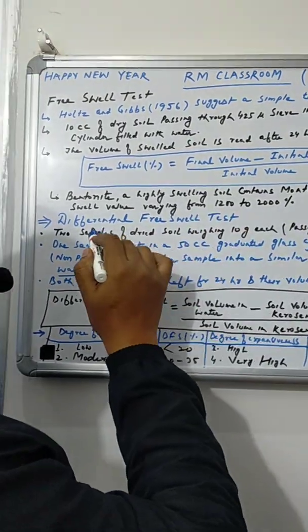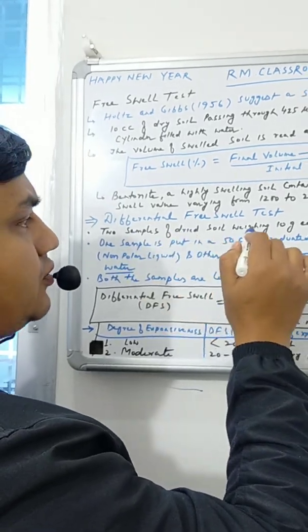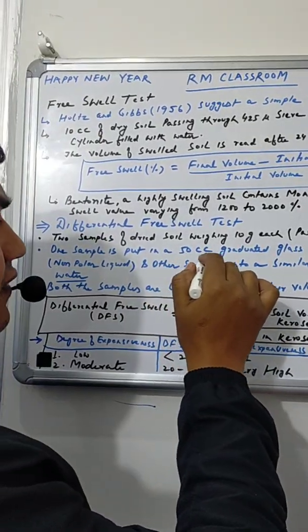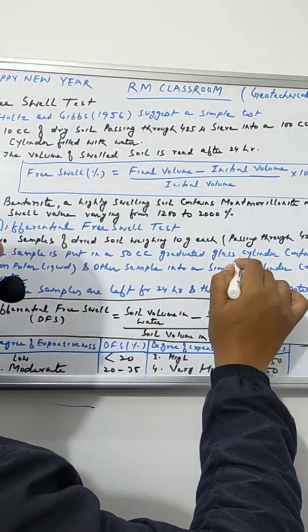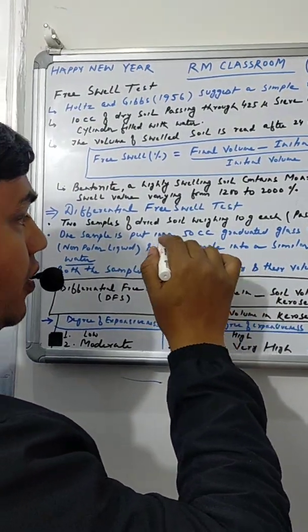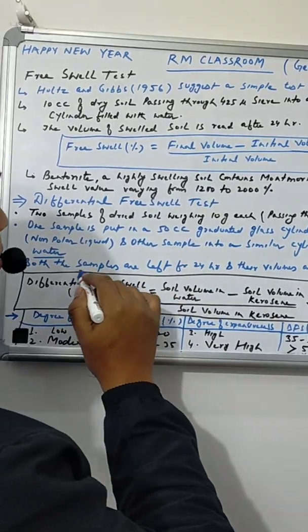Another test is the differential free swell test. In this test, two samples of dried soil, 10 grams each passing through 425 micron sieve, one sample is put in a 50 cc graduated glass cylinder containing kerosene oil, and another cylindrical sample of the same capacity having distilled water.